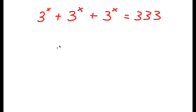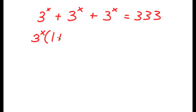The first thing I'm going to do is factor out 3 to the power of x from my left-hand side. So now I have 3 to the power of x times 1 plus 1 plus 1 is equal to 333.